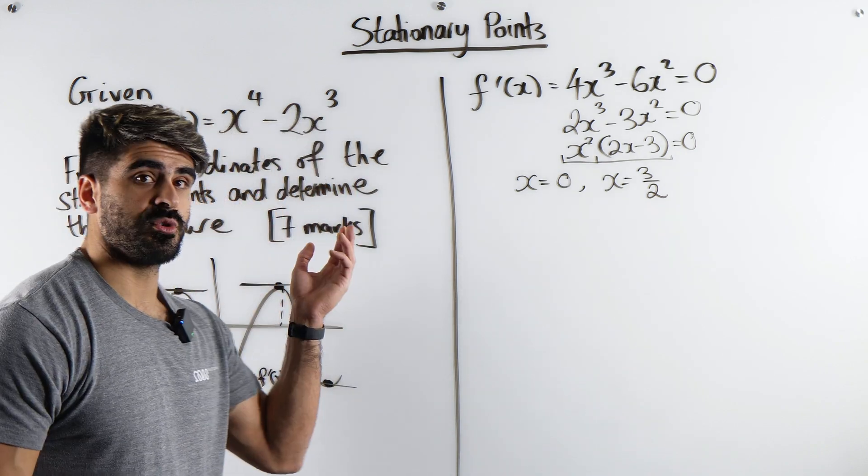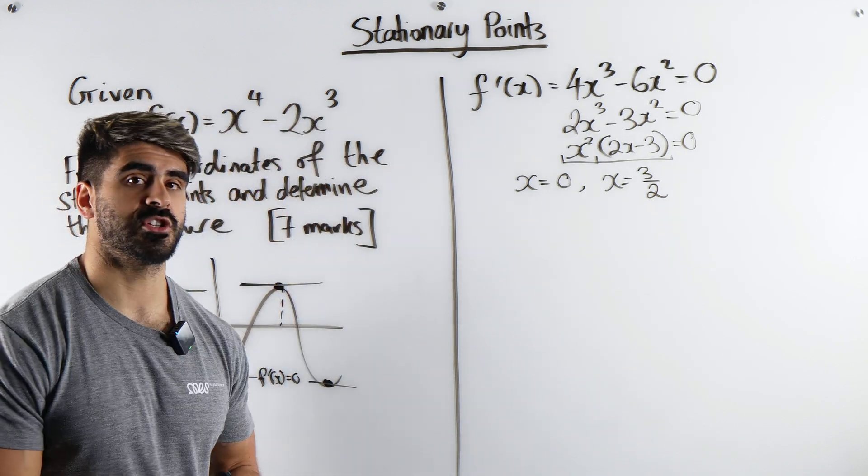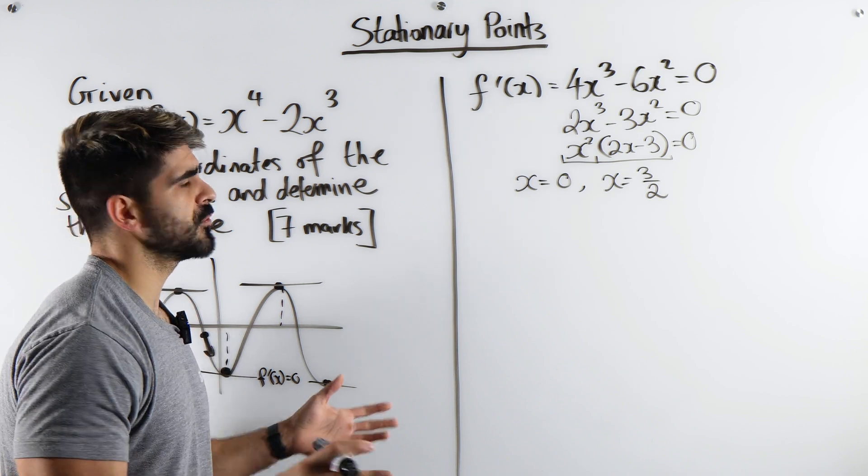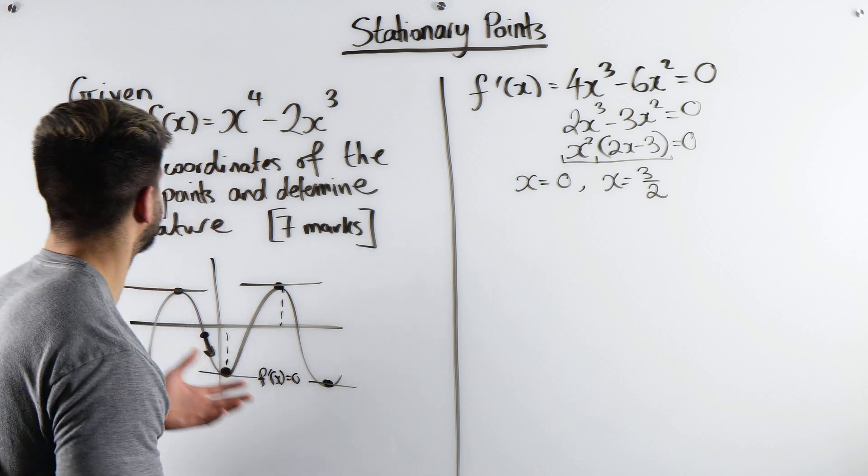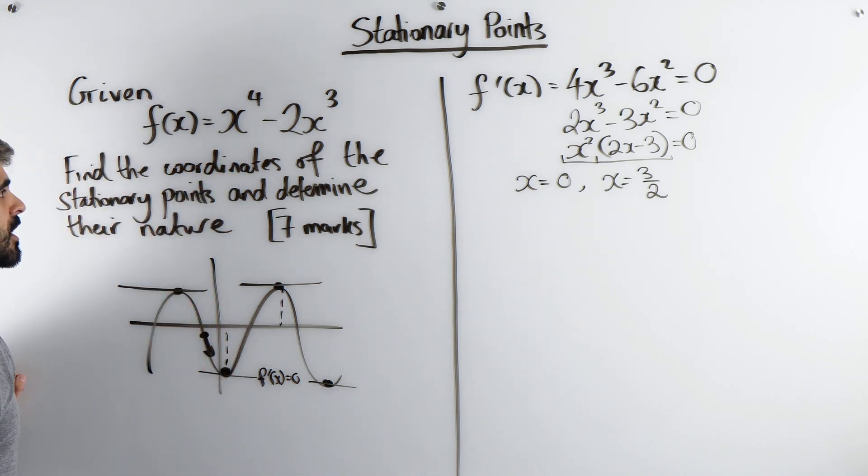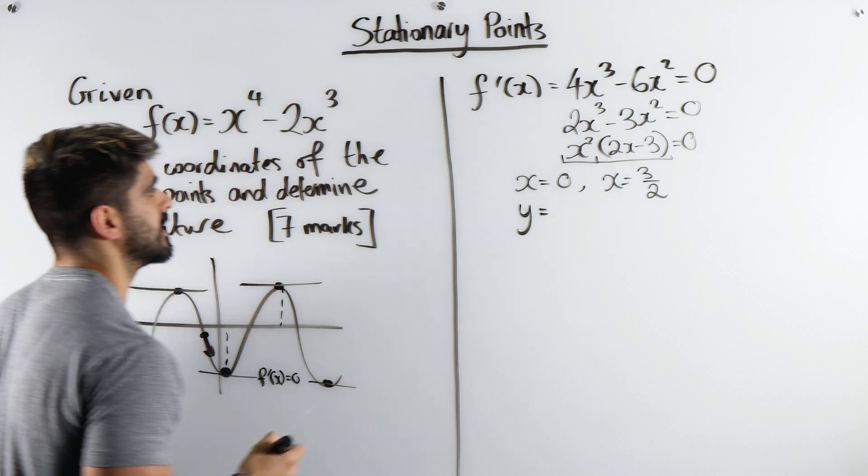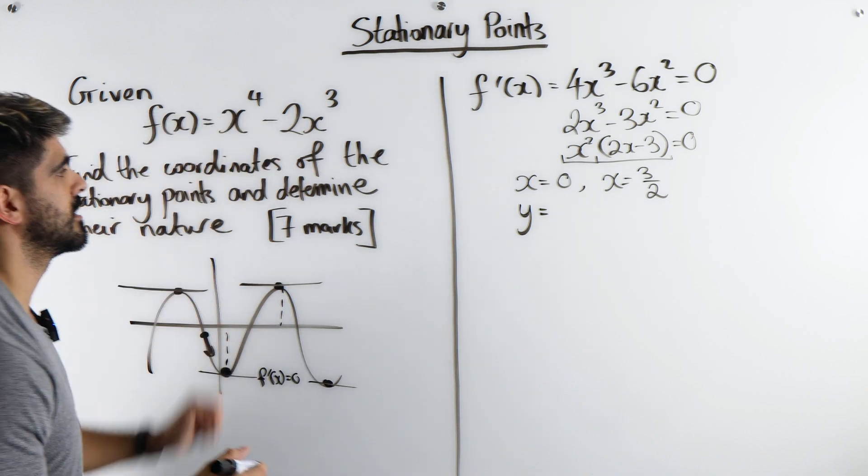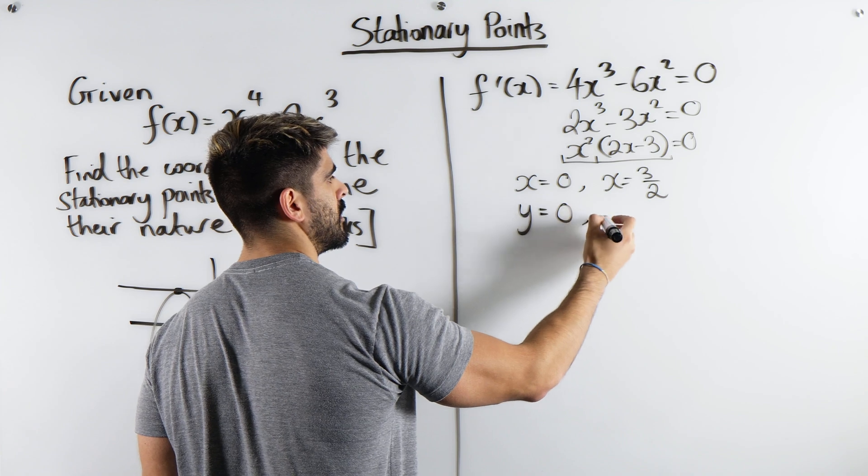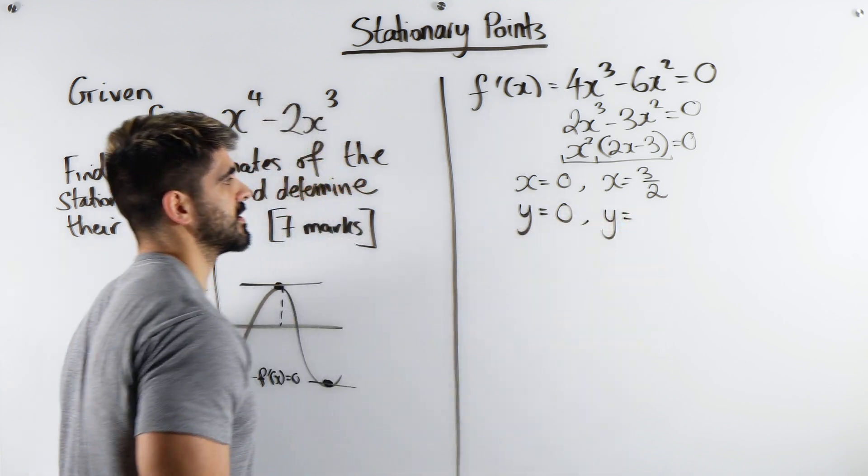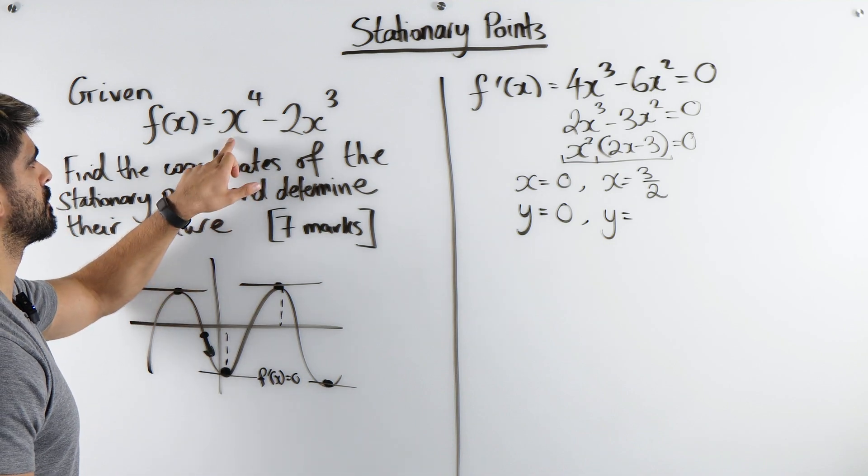Now we're going to have to classify these stationary points. Or if you want, you can work out what the y value is. It does say find the coordinates of the stationary points. So if I sub in x is 0, here you're just going to get 0 minus 0, that's just 0.